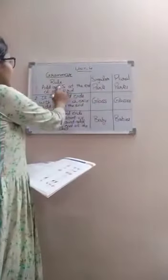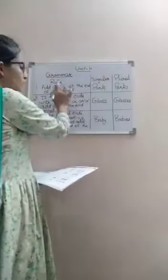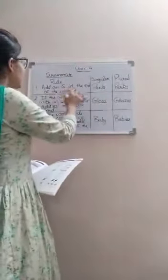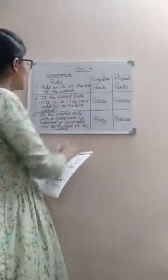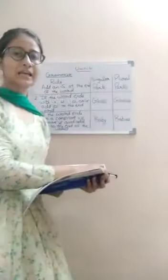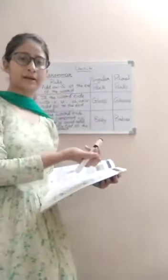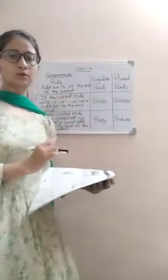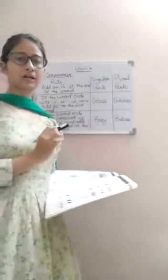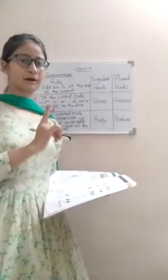Rule number one: add an S at the end of the word. This we have learnt yesterday. Add an S at the end of the word. For example, park. Park is a singular word.